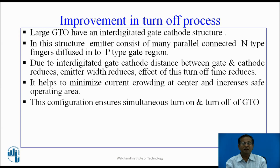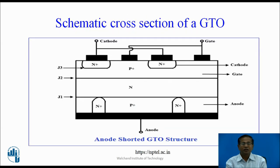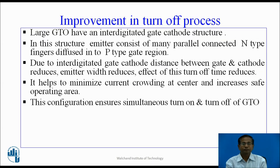The third method is very popular: the interdigited gate cathode structure. In large GTOs, this structure is used. The emitter consists of many parallel N-type fingers diffused into the P-type gate region. Due to the interdigited gate cathode structure, the distance between the gate and cathode reduces, the emitter width reduces, and as a result, the turn-off time reduces. It also helps minimize current crowding at the center and increases the safe operating area. This configuration ensures simultaneous turn-on and turn-off of GTO.